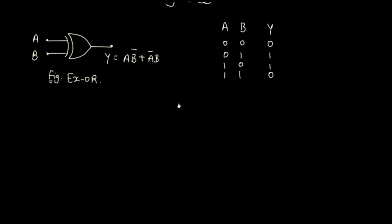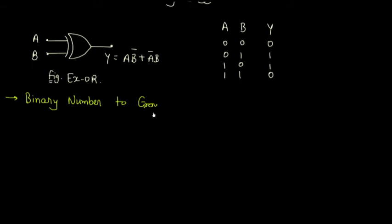In this conversion process from binary to grey code, we will use the XOR gate to convert a binary number into grey code. Let's discuss the conversion method with the help of an example. We have one 4-bit binary number, and the number is 0110.